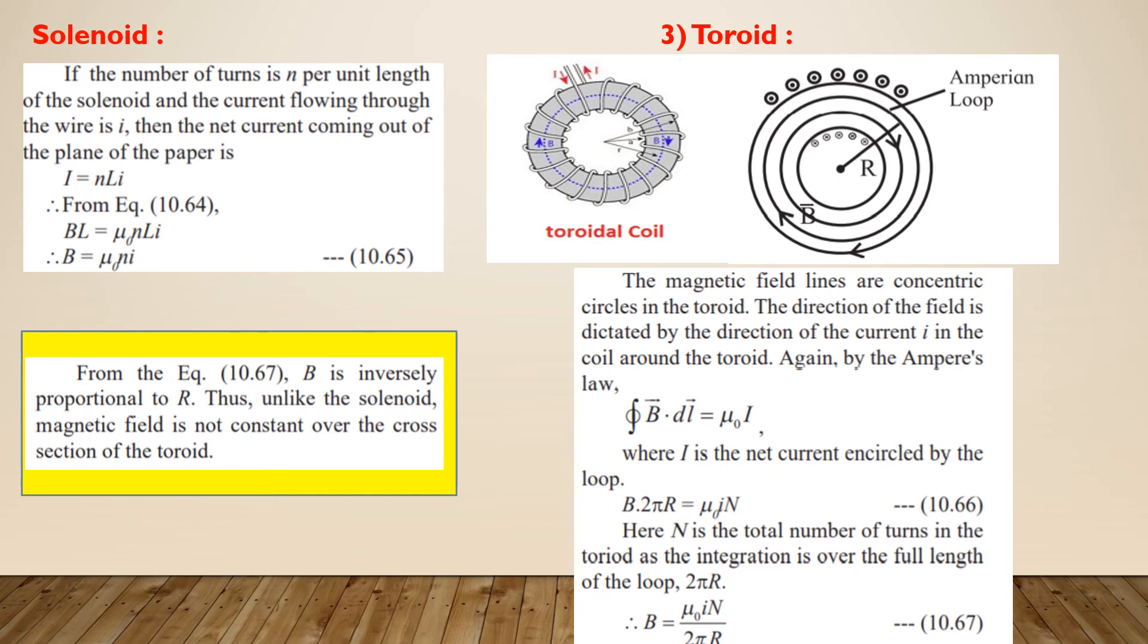The second diagram shows the cross section of a toroid coil with its magnetic field lines. As we can see, the field lines are concentric circles. In order to apply Ampere's law and to determine the magnetic field at a distance R from the center of the toroid coil, let us consider the Ampere loop in the form of a circle of radius R within the toroid.